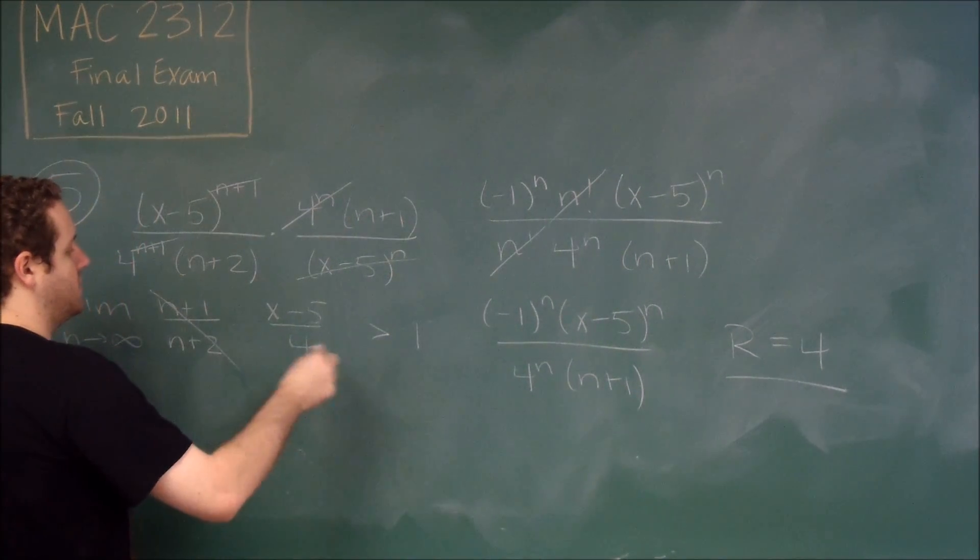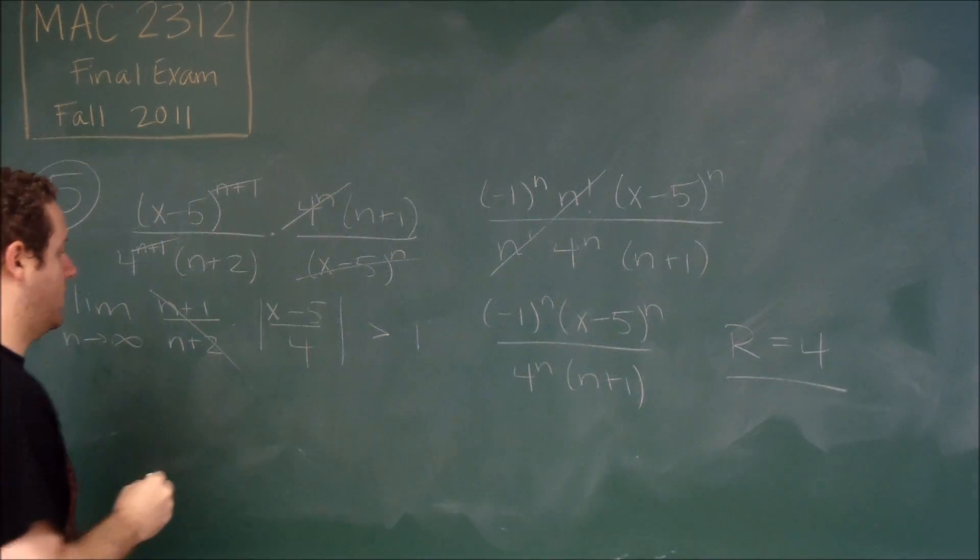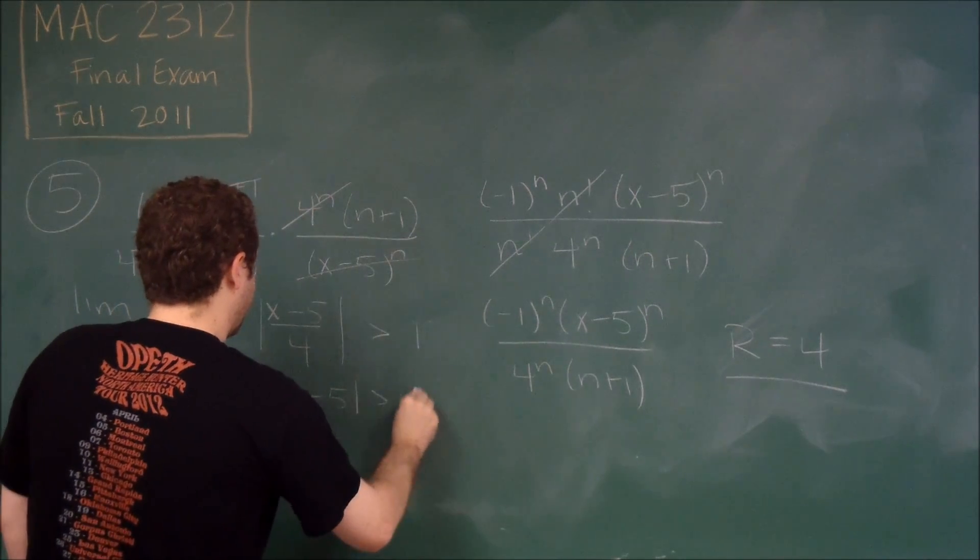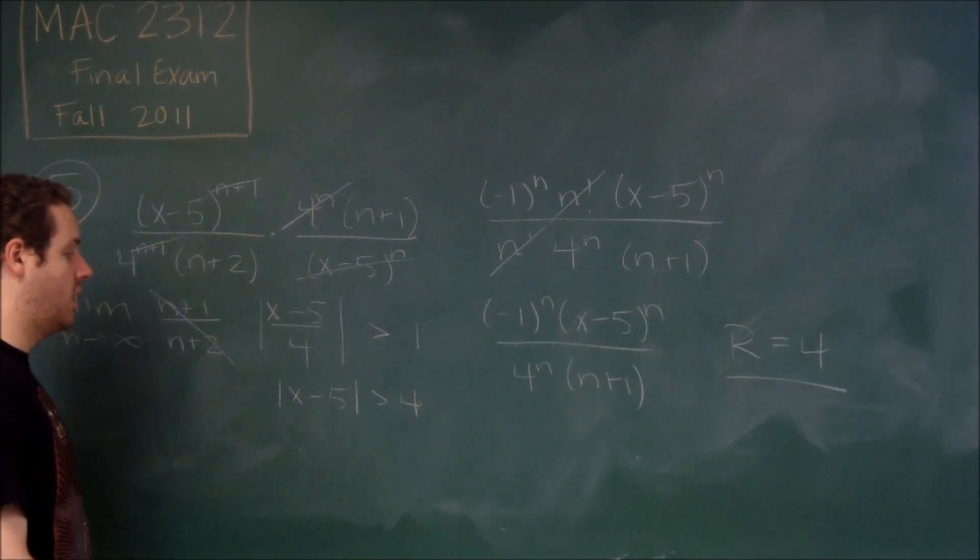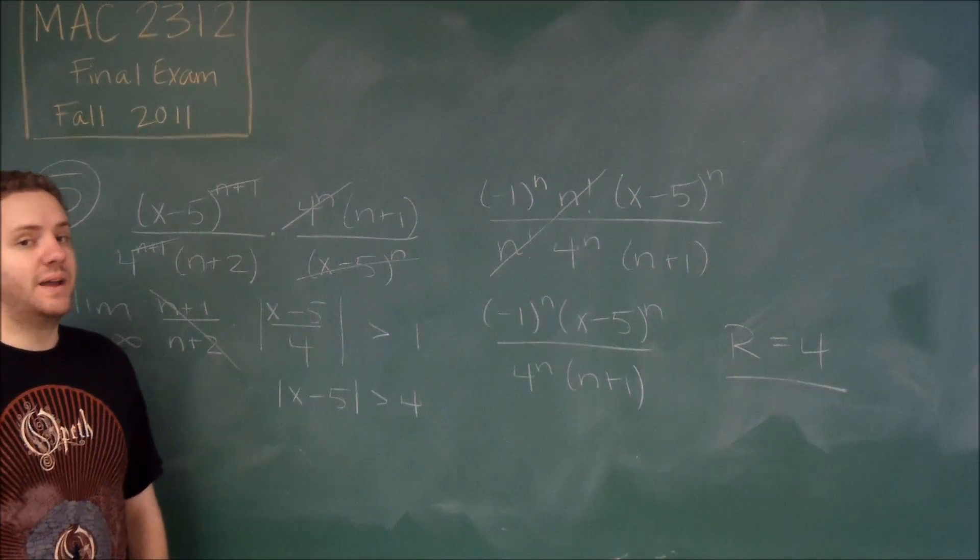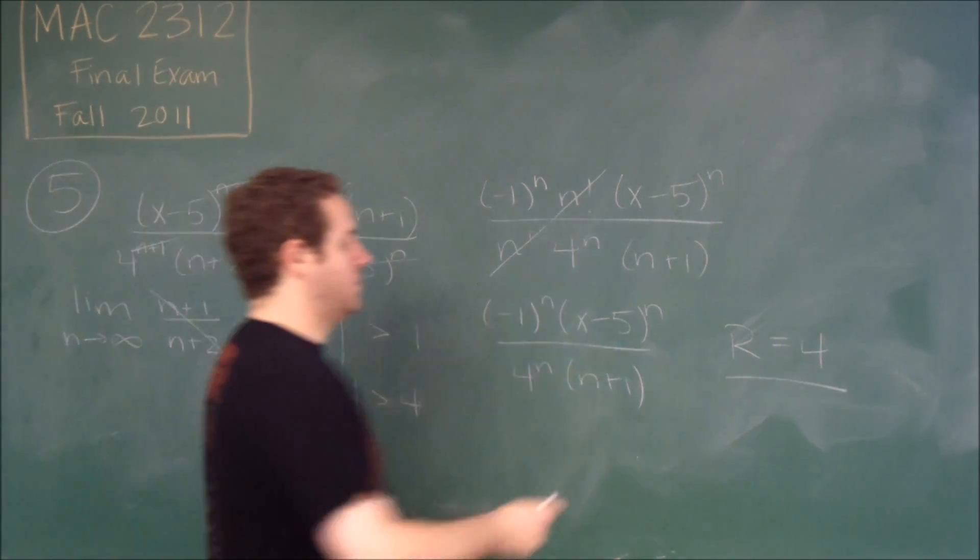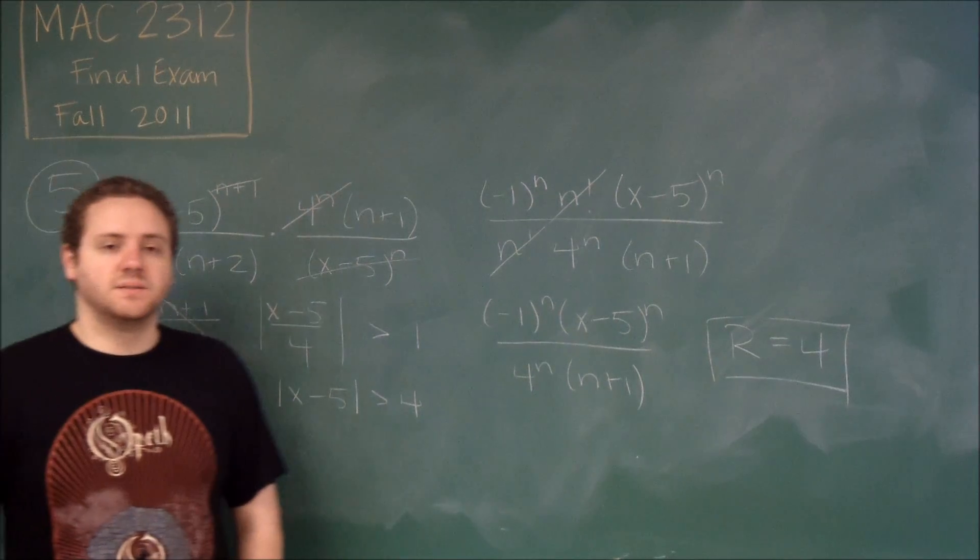And you can see here that if you multiply this, remember this is absolute value, so if you multiply that across we get absolute value of x minus 5 is less than 4, which means x can go anywhere from 1 to 9. So therefore we have a radius of 4. So that's how you figure out the radius of convergence.